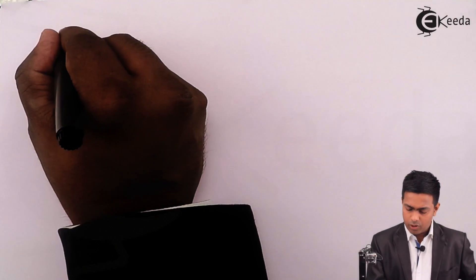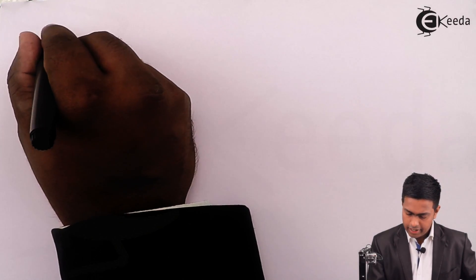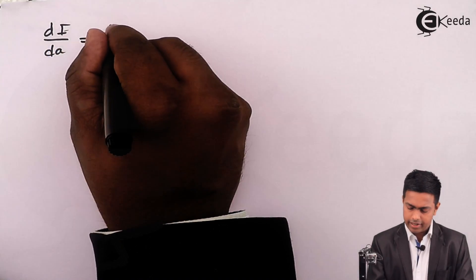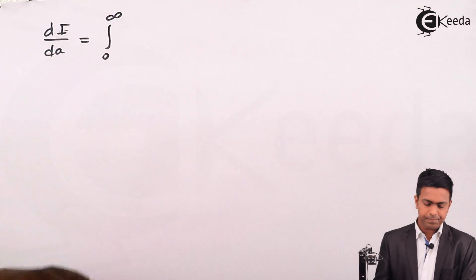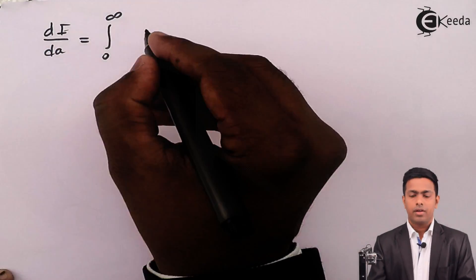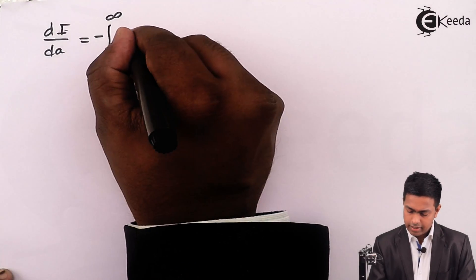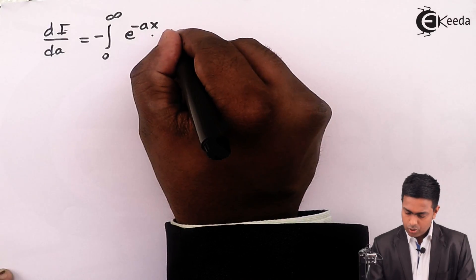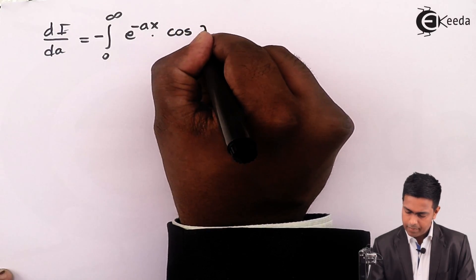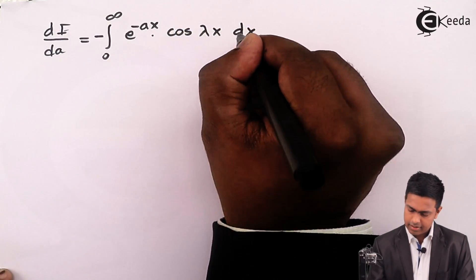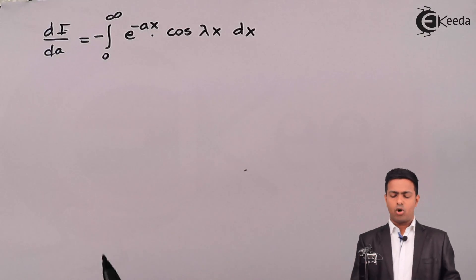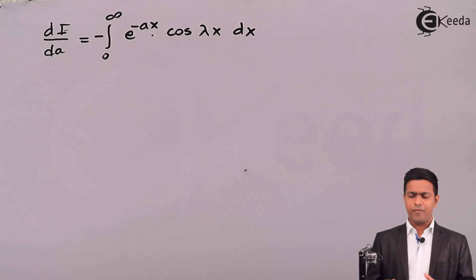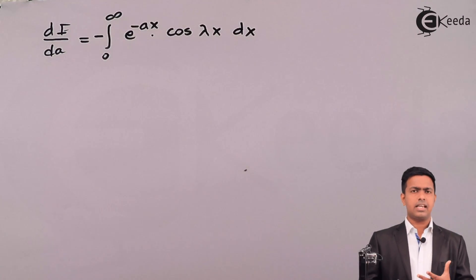So dI/da = integral from 0 to ∞ of −e^(−ax) · cos(λx) dx. Now we'll solve this integration — it is a standard property of integration.